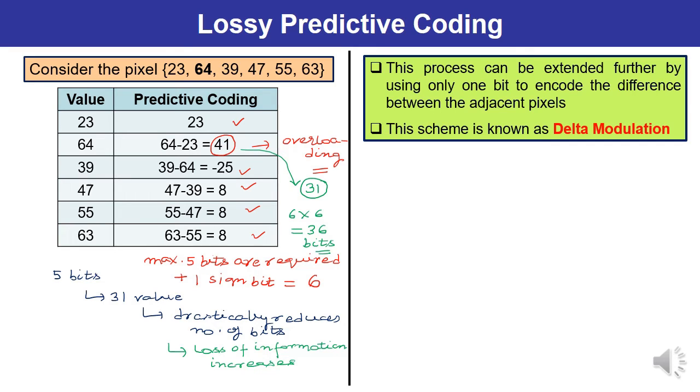This is a very important point. You can note it down. This process can be extended further by using only one bit to encode the difference between the adjacent pixels. And this scheme is known as delta modulation. Delta modulation goes one step further by using only one bit for the representation of the quantized error value. This can be positive or negative.